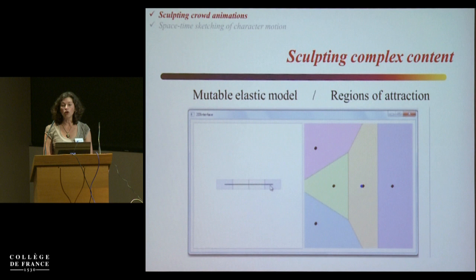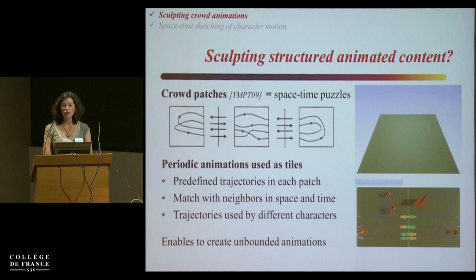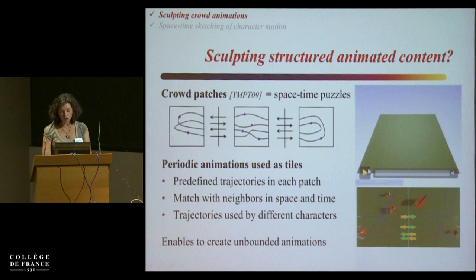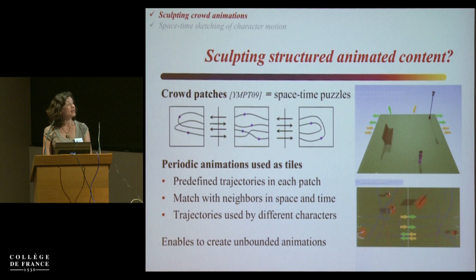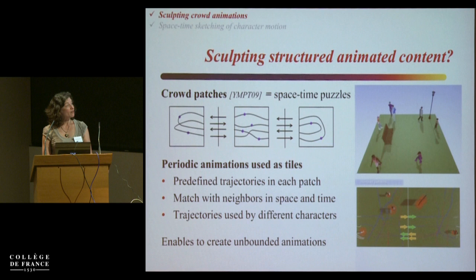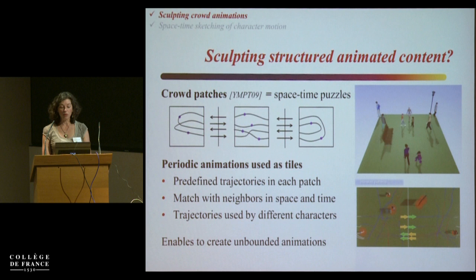Our first work on sculpting motion was to generalize this to animated content, specifically crowd animation. Crowd animation data is like a space-time puzzle if you model it with crowd patches. Crowd patches are little trajectories that you can put together. You have static obstacles and in and out points, with trajectories connecting these points — you need the same number of points in and out. You can have different characters walk along those trajectories. This can be used like tiling, but tiles that work in space and time.